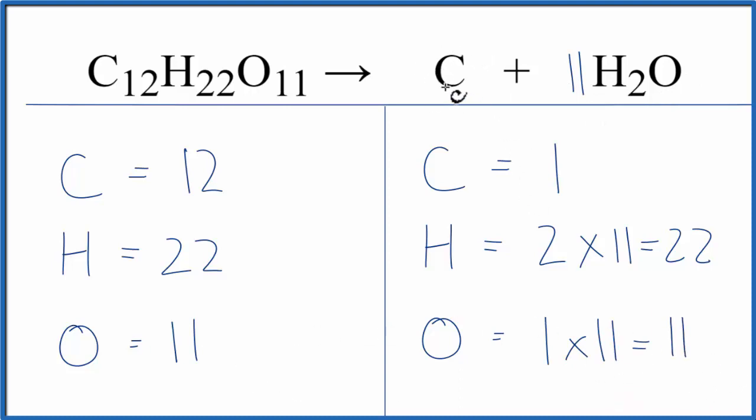We left the carbon till last, we need 12 carbons to balance this equation. We'll just put a coefficient of 12, 1 times 12 that equals 12, and this equation is balanced.